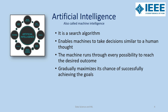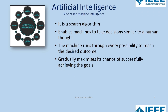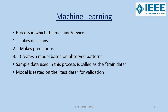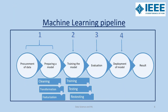We will be looking at machine learning. Machine learning is a process in which the machine takes decisions, makes predictions, and creates a model based on previously observed patterns. Computer systems learn from the environment to improve themselves through experiments. The sample data used in this process is called train data and the model is tested on test data for validation.